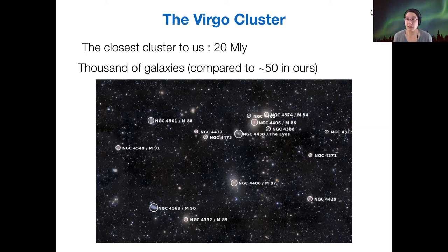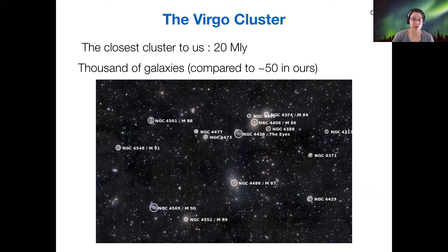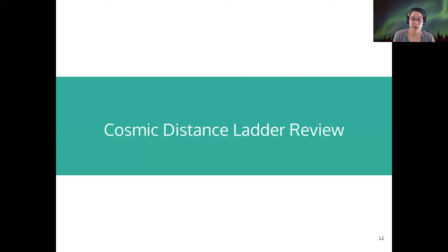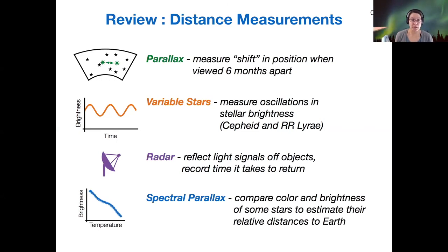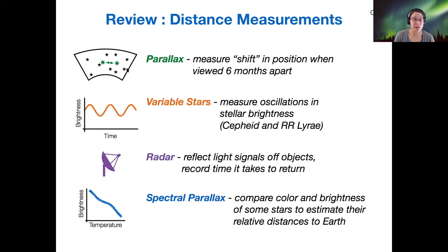We've already seen how hard it is to measure even the distance to the globular clusters in our own Milky Way's halo, and it's only going to get more difficult to measure longer and longer distances — that's the challenge we're up against. To review some previous distances from our cosmic distance ladder: first, there's the method of parallax, where you measure at different times of year as the Earth orbits and see stars shifting against a background of fixed stars. We use parallax and some trigonometry to calculate their distance.